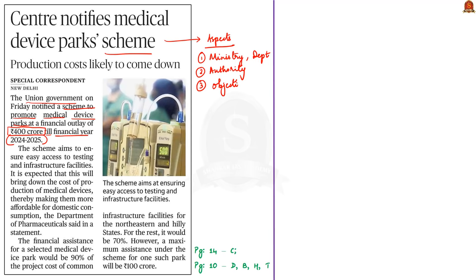When I say funding, you should note how the funding is being shared between the center and the states — whether it is a central sector scheme or a centrally sponsored scheme — and where the scheme is being implemented, for the entire India or only a few states. These areas frequently appear in previous years' question papers for the preliminary examination.